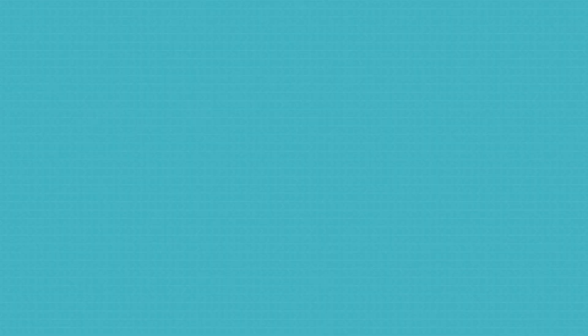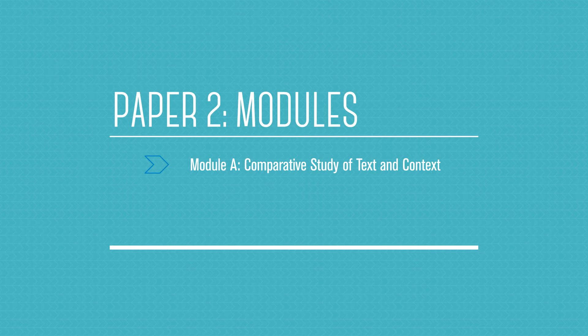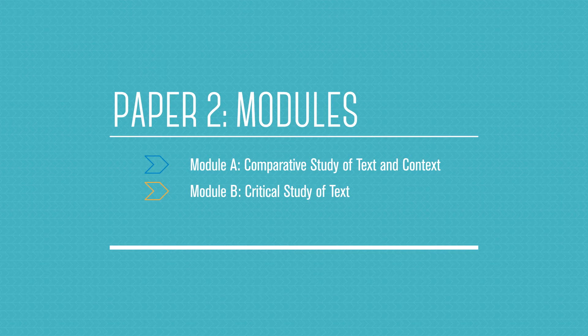First of all, I want to talk about the three modules, which you're probably already very well aware of. The first one is Module A, and in my way of thinking, it's incredibly demanding because you've got a comparative study of two texts. The second one is Module B, the critical study of text, where you've got to know your texts intimately — inside out — knowing the beginning, the end, if it's poetry every single poem, if it's speeches every speech. And then of course Module C, the last one, which I call the bookend to the agency paper for English, because it's representation and text.